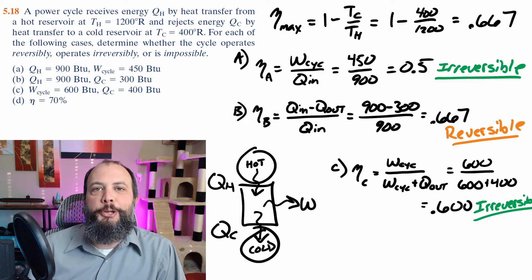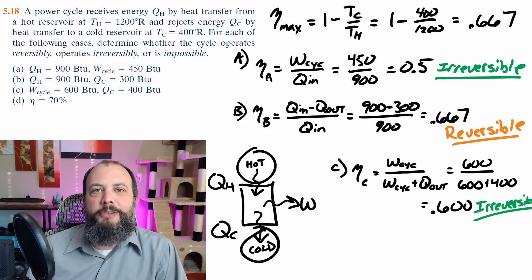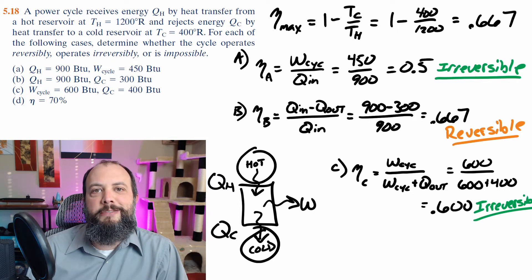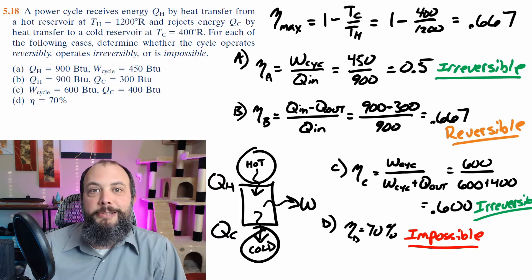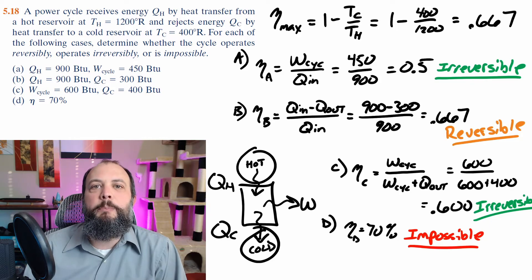For part C, when given work and Q_out, we can replace the denominator since Q_in will equal work plus Q_out. So this time we get an efficiency of 60%, which is below the maximum 66.7%. So this is irreversible. And this last problem gives us an efficiency of 70%, which is higher than the 66.7% maximum Carnot efficiency. So having this would be impossible.